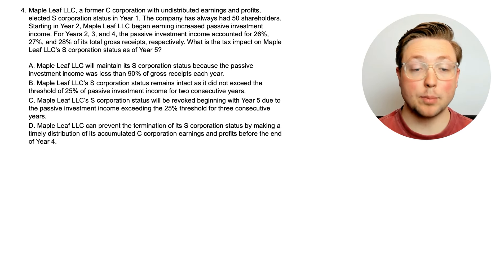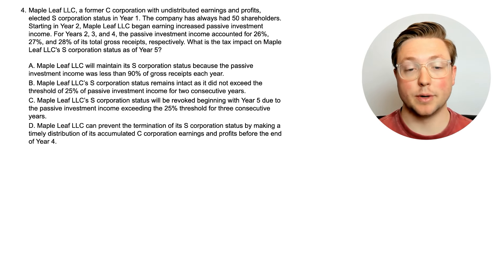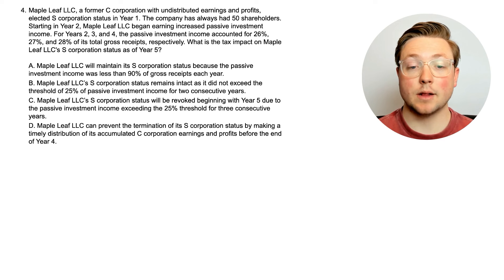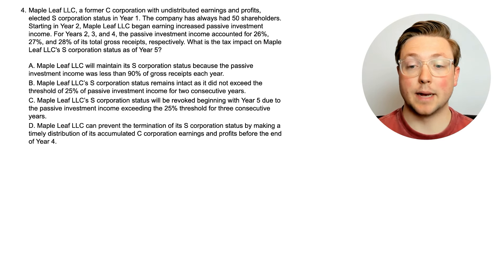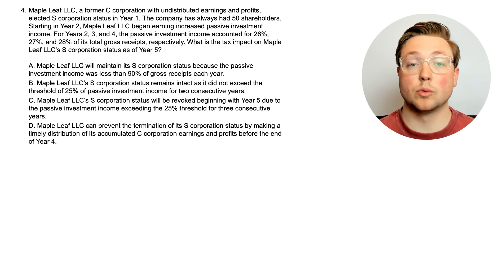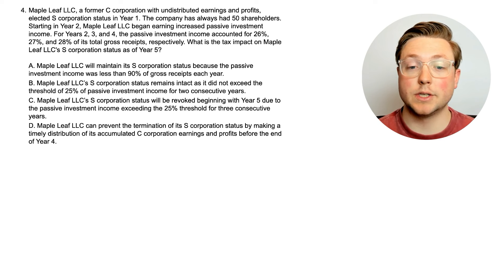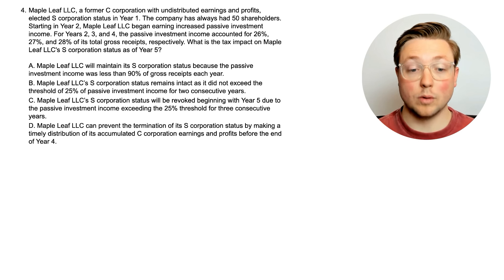Here is question four. Maple Leaf LLC, a former C-corporation with undistributed earnings and profits, elected S-corporation status in year one. The company has always had 50 shareholders. Starting in year two, Maple Leaf LLC began earning increased passive investment income. For years two, three, and four, the passive investment income accounted for 26%, 27%, and 28% of its total gross receipts respectively. What is the tax impact on Maple Leaf LLC's S-corporation status as of year five? We have no idea what the rule is in this case — let's go straight into the answer to learn one more rule about all this.